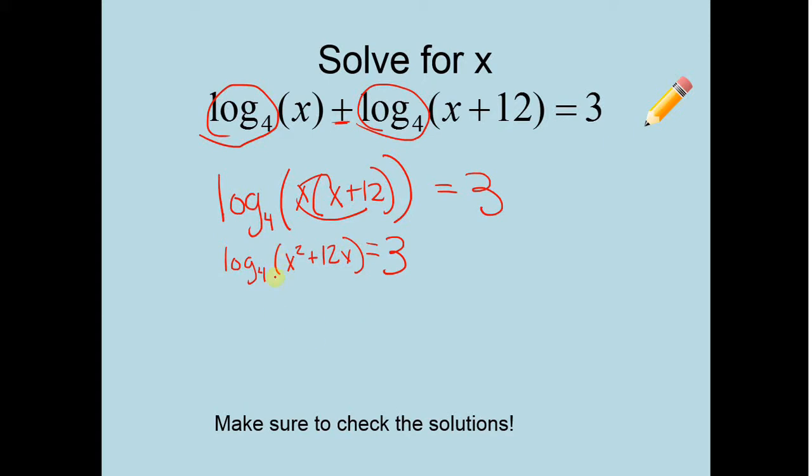This is technically log base 4 of x squared plus 12x. Just distribute that x in there. Still equals 3, right? So now, we get to convert to exponential form. So I can't get to those x's. So it's going to be 4 to the 3rd equals x squared plus 12x. 4 to the 3rd, that is 64. How can I solve this particular problem? Let's subtract 64. Get everything to one side. So I'm going to get x squared plus 12x minus 64 equals 0.